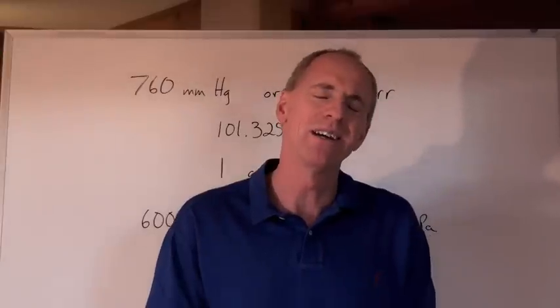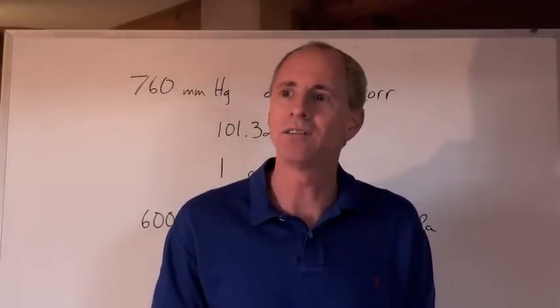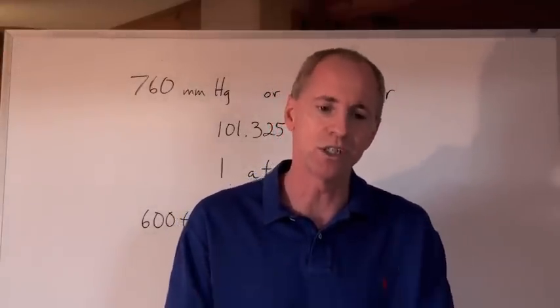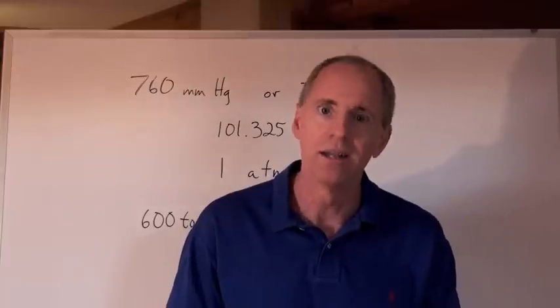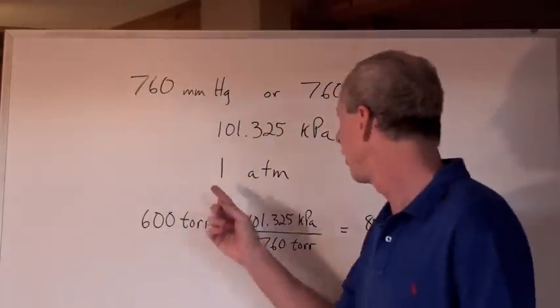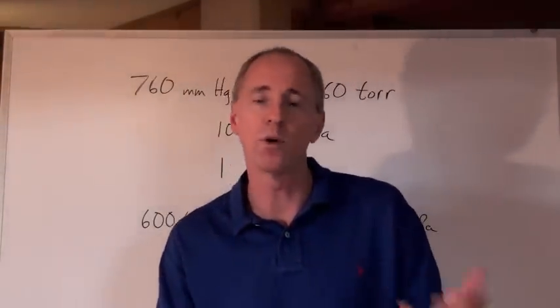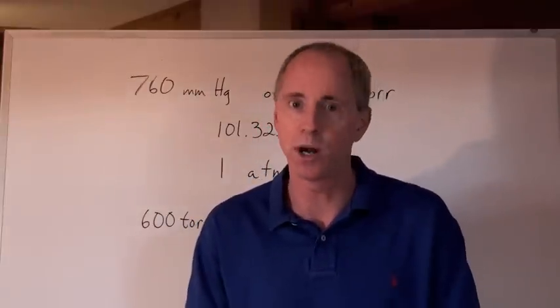We finally came up with a good idea and said, at sea level, what should we just call pressure? How about one? That's way better. And so that's called one atmosphere. So at sea level, we've got 1.00 atmospheres of pressure.